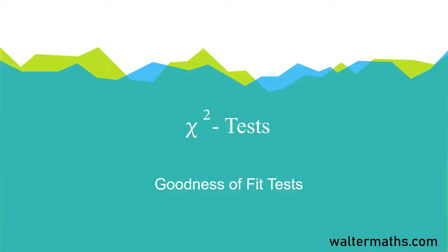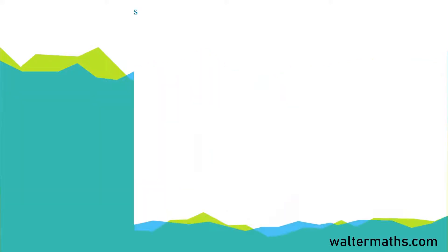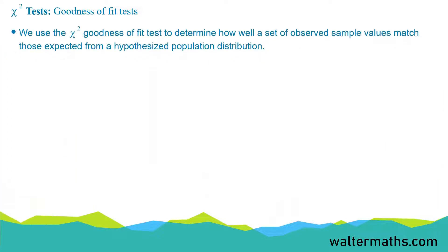In this lesson, we're going to be talking about the chi-squared goodness of fit test. We use the chi-squared goodness of fit test to determine how well a set of observed sample values match those expected from a hypothesized population distribution.